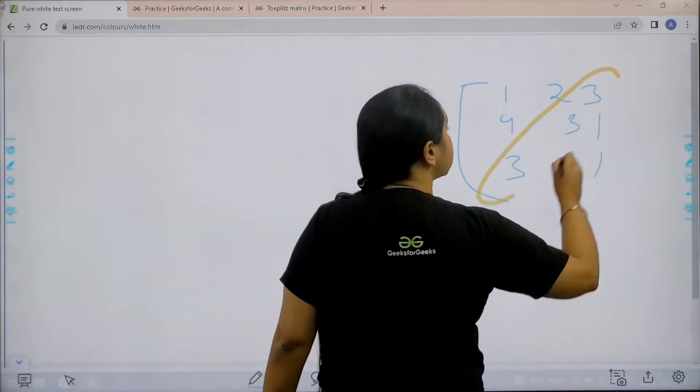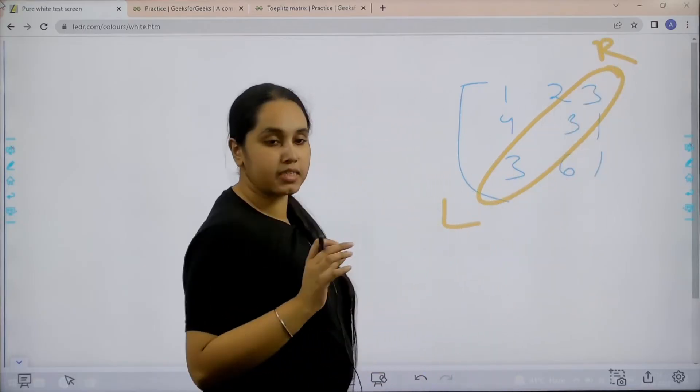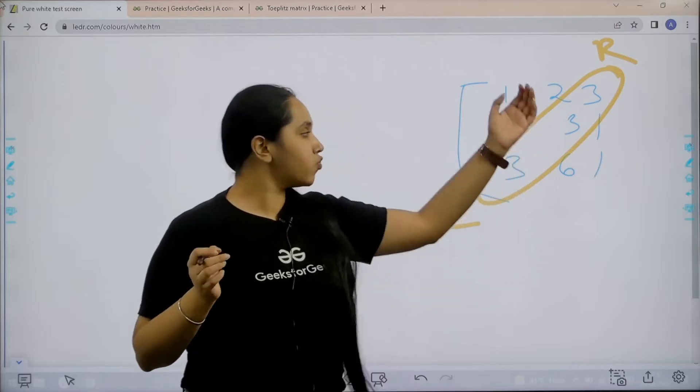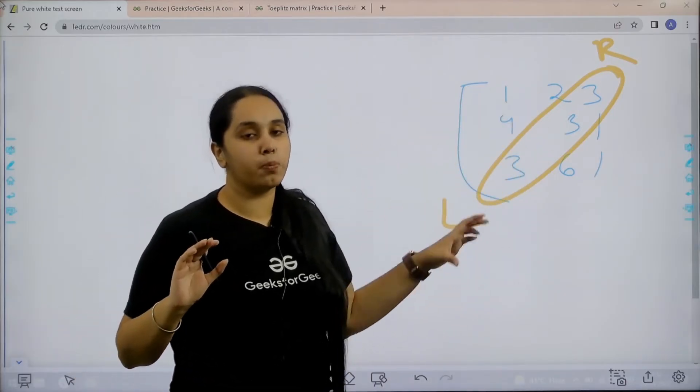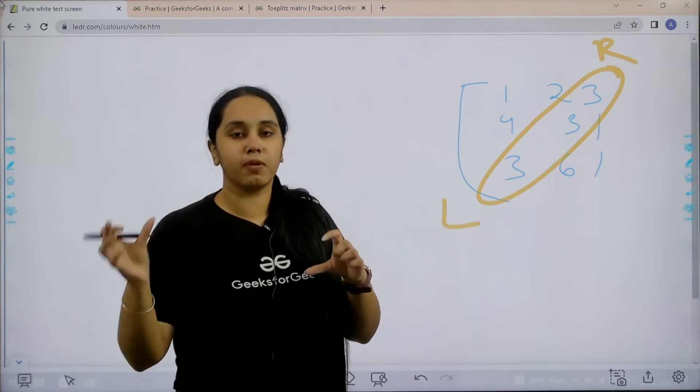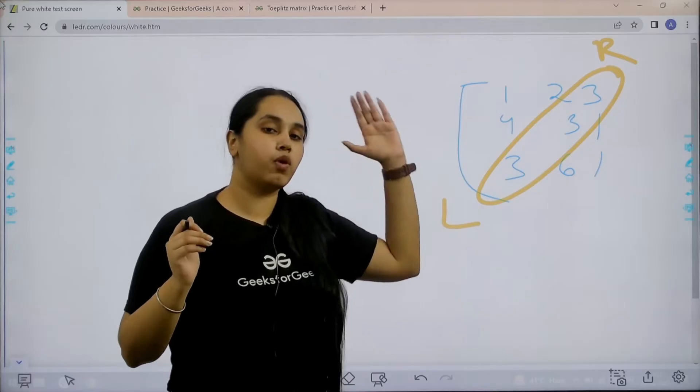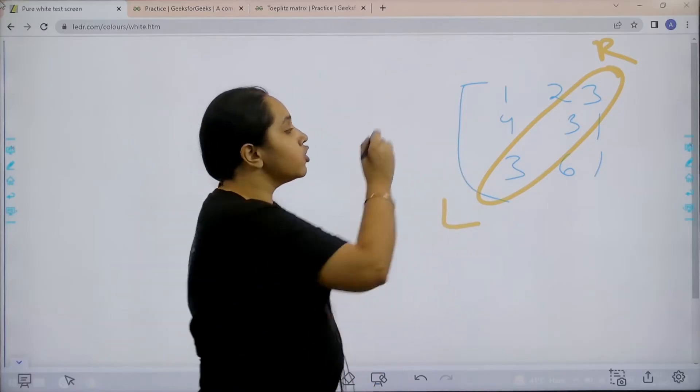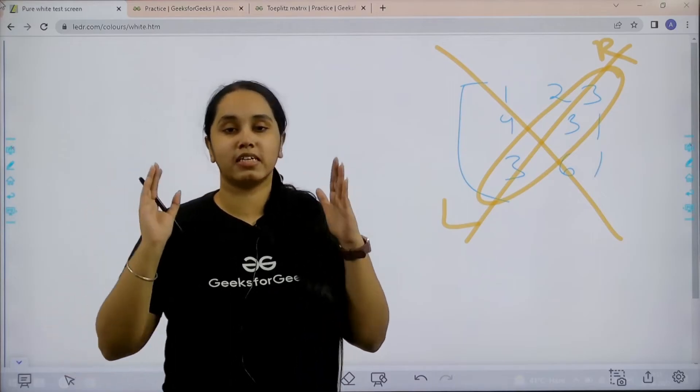Now in this matrix you can clearly see the diagonal elements from right to left are same. The diagonal elements from right to left side are same. This does not make it a Toeplitz matrix because in a Toeplitz matrix we have a condition. It should be the diagonals from left side to right side. So this is not an example of Toeplitz matrix. So do not get confused.